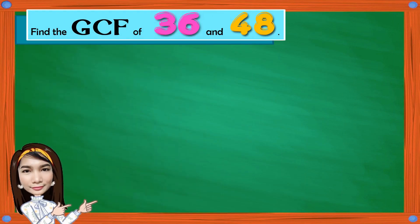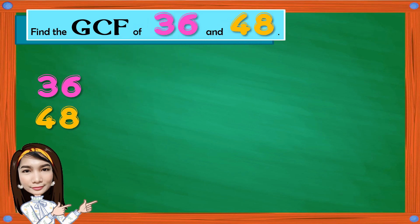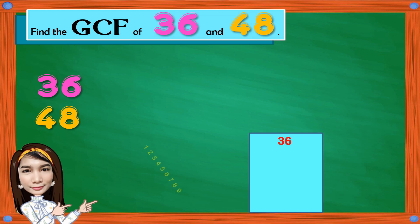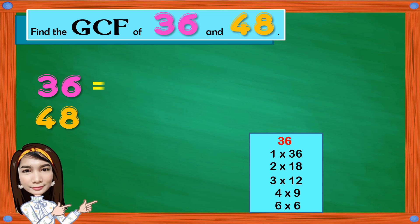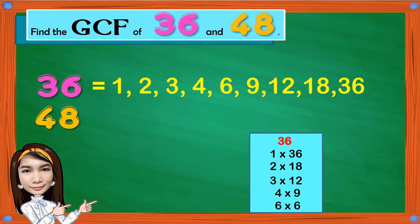Moving on to the next example: find the greatest common factor of 36 and 48. Let's start with 36. Using the counting numbers 1 to 9, we have 1 times 36 is 36, 2 times 18 is 36, 3 times 12 is 36, 4 times 9 is 36. 36 is not divisible by 5. 6 times 6 is 36. 36 is not divisible by 7, not divisible by 8, and 9 is already given. So the factors of 36 are 1, 2, 3, 4, 6, 9, 12, 18, and 36.